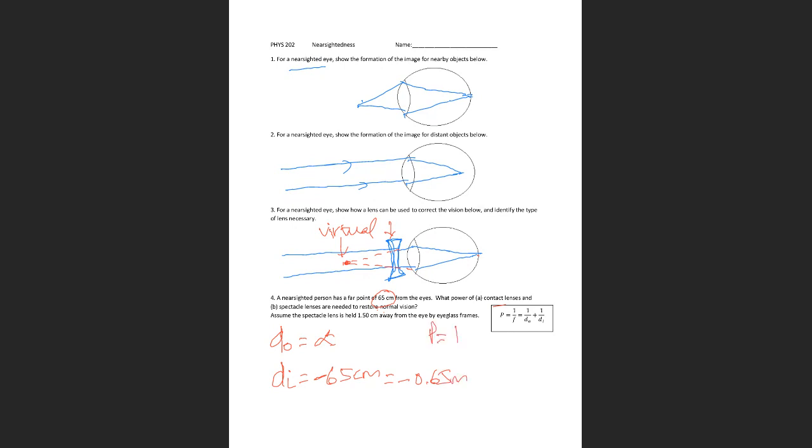Now I can calculate the power. The power is basically 1 over do plus 1 over di. If you plug in these numbers, we get 1 over infinity and then di is negative, so minus 1 over 0.65.